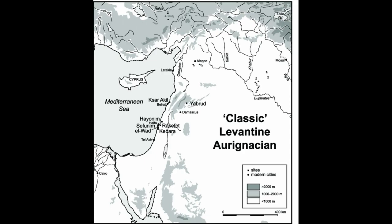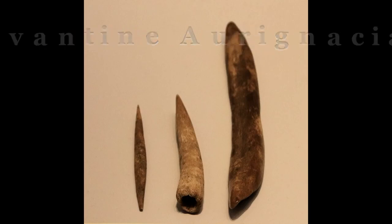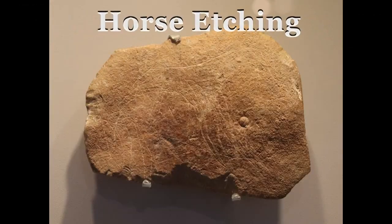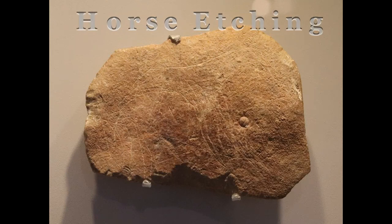The Levanto-Aurignacian complex was prevalent in the Levant from about 39,000 to 24,000 BC. This culture is connected with more sophisticated bone needles, points, and tools for punching holes like the ones shown here, found in a cave in Israel dating to around 30,000 BC. During this period, the late Aurignacian culture is also known as the Antelian culture and spread its influence as far north as southern Anatolia.